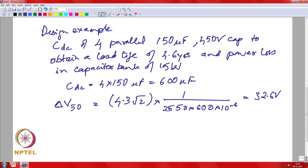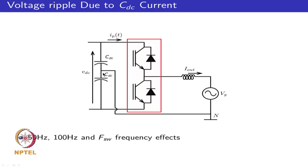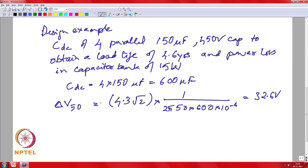We can observe that this 50 Hz effect applies such that if the current is positive, it charges up the bottom bank and discharges the top bank. So you might have +33 volts on one bank at one instant but the top bank will have −33 V. The total voltage across the entire bank is not affected by this 50 Hz — on a total bank basis it is not observed; it is not seen on VDC.